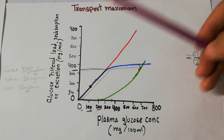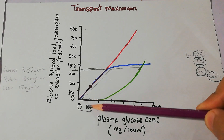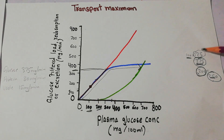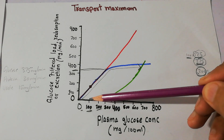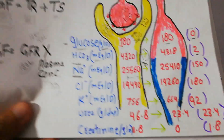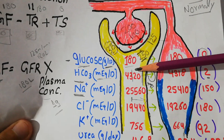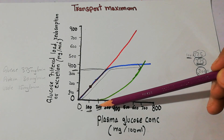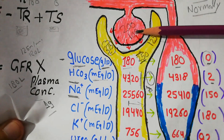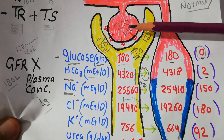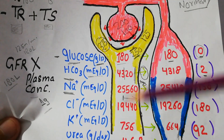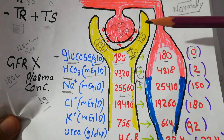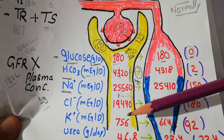Initially, when the plasma glucose concentration is normal — around 100 mg per 100 ml — the filtered load of glucose is 125 mg per minute. At 100 plasma glucose, the amount of glucose filtered from blood into the proximal tubule is 125. When the plasma concentration of glucose increases to 200, the filtered load or tubular load of glucose increases to 250.